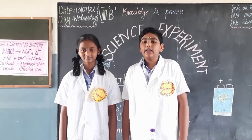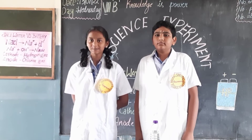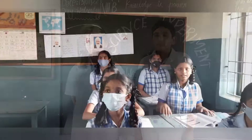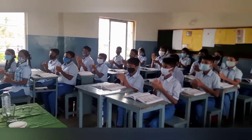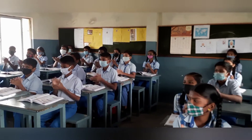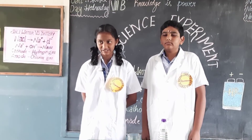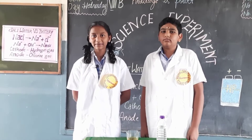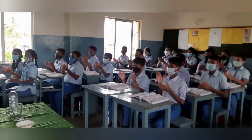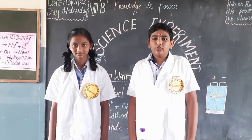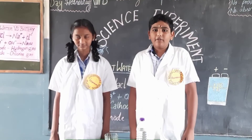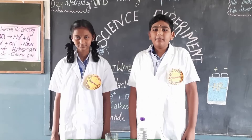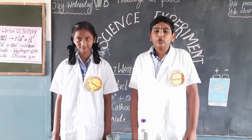Now we are going to ask some questions regarding this experiment. What are the two types of electrodes in the battery? The answer is cathode and anode. Next question: what is the chemical name of salt? Sodium chloride. Next question: what is the formula of sodium chloride? It is NaCl. Final question: what is the name of the gas released at the cathode? It is hydrogen.